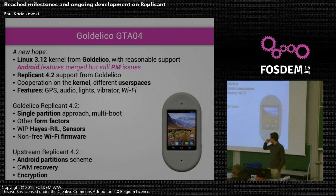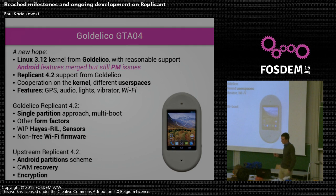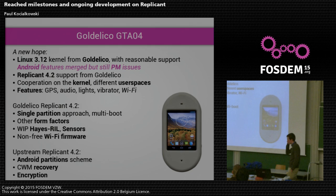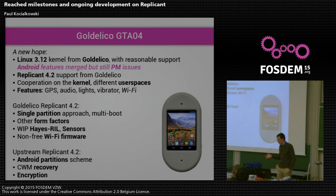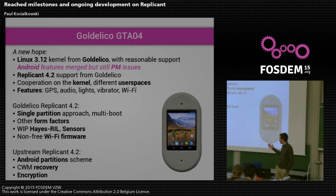We have two versions. One made by the manufacturer, Golden Delicious, where they use a single-partition approach allowing multi-boot with multiple operating systems. They also support other form factors like a tablet with a bigger screen. They have work-in-progress radio interface library, work-in-progress sensors, and they ship the non-free Wi-Fi firmware — something we don't want to do and never will. On the official Replicant version, we have a typical Android partition scheme with three or four separate partitions, which allows for encryption because the Android system expects that sort of layout. We also have recovery — a nice interface to install the system.